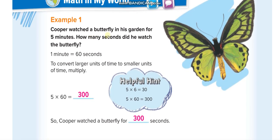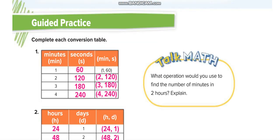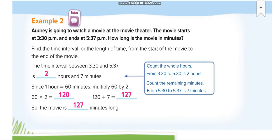Cooper watched a butterfly in his garden for 5 minutes. We need to convert it into seconds. One minute is 60 seconds, so 5 minutes equals 5 times 60, which is 300 seconds.